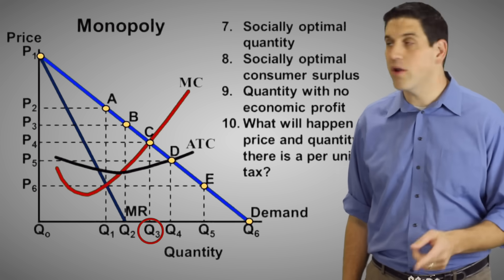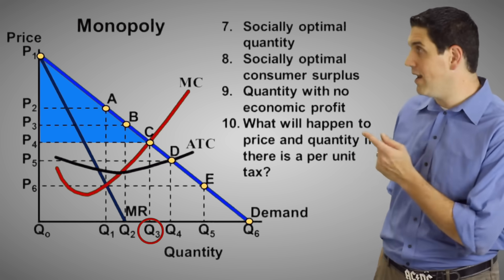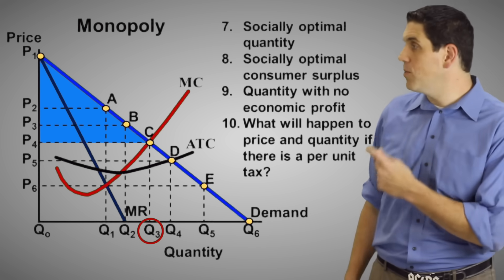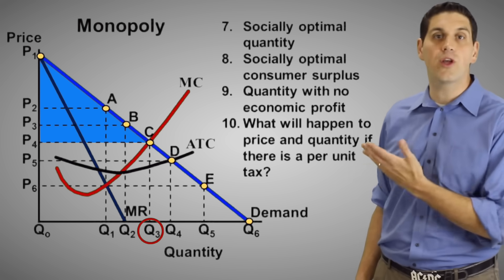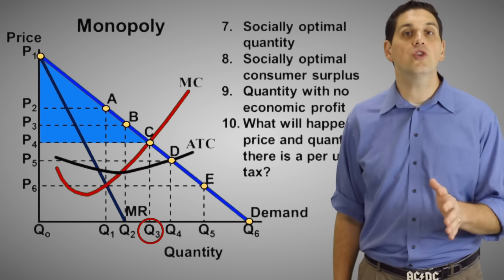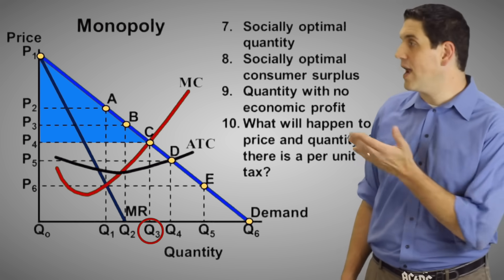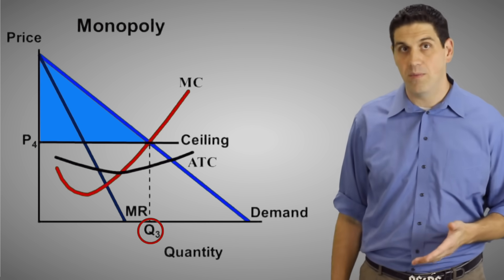Understanding that concept will help you understand question eight. Consumer surplus at socially optimal must be right here. It's the triangle of P1 C and P4. This is the consumer surplus that would exist if this was a perfect competitive market and they're producing the socially optimal quantity of Q3. This also explains why the government might want to regulate a monopoly. If the monopoly has deadweight loss, they can put a price ceiling right here and force them to produce the quantity Q3 that's socially optimal.